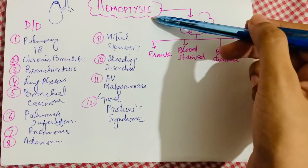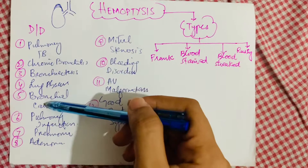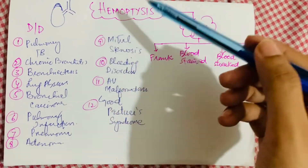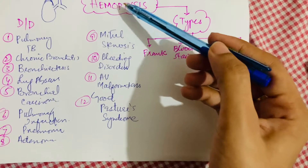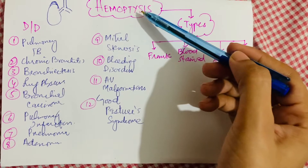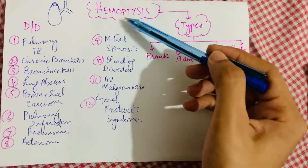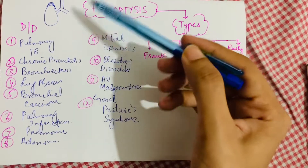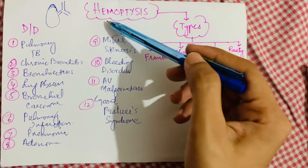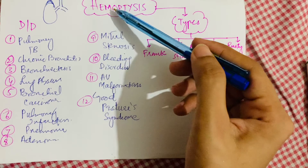In this video we are going to learn what is hemoptysis, what are its types, and what is the differential diagnosis if a person is having hemoptysis. Hemoptysis means coughing up of blood. The patient coughs and there is blood in the sputum. It is not vomiting of blood, but it is blood-stained sputum — coughing up of blood where the blood is bright red in color.